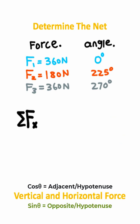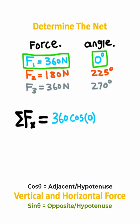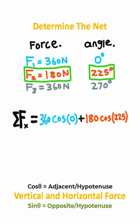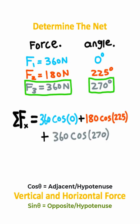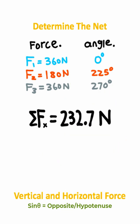We have the sum of all forces in the x-direction, and since it's the x-direction, we're going to be using the cosine. We take our 360 newton force and multiply it by the cosine of 0, then add that to our 180 newton force times the cosine of 225, plus our 360 newton force times the cosine of 270. If you type all these numbers into a calculator, you should get 232.7 newtons.